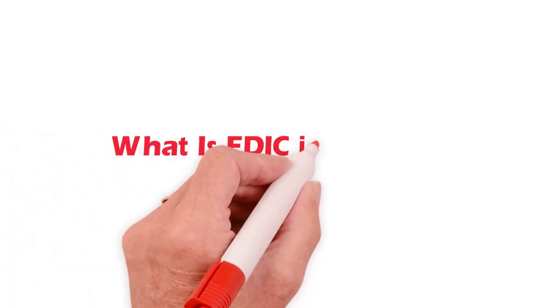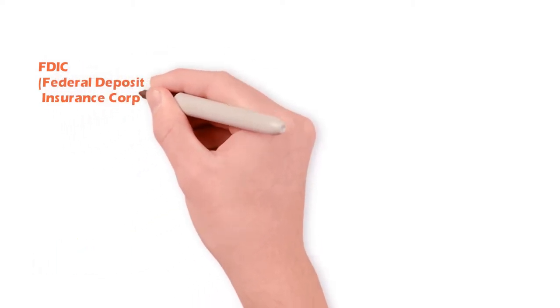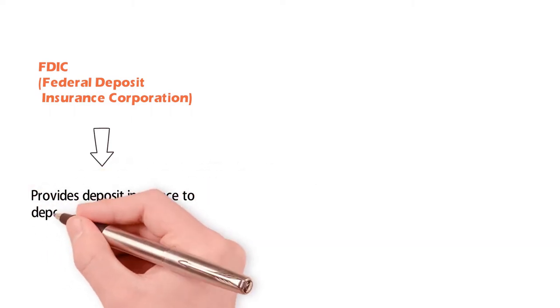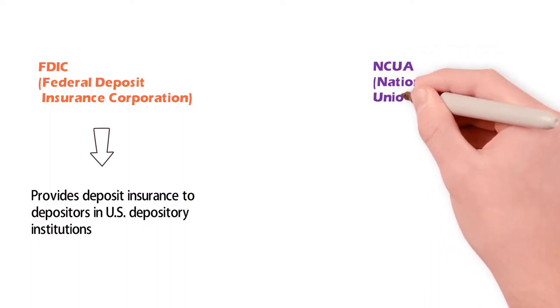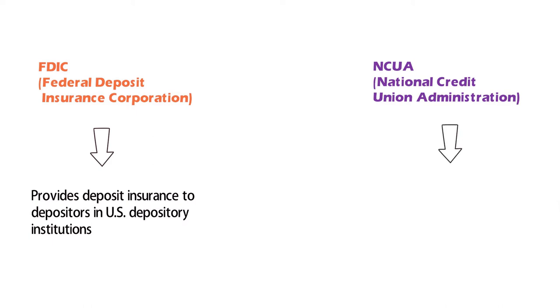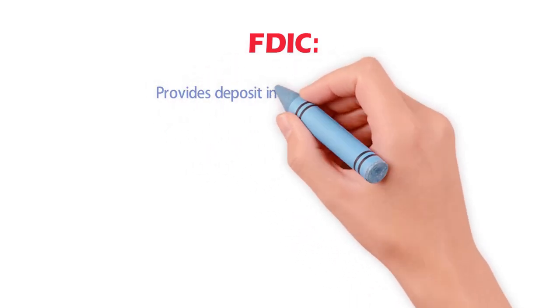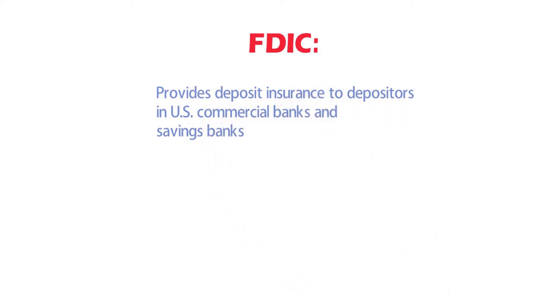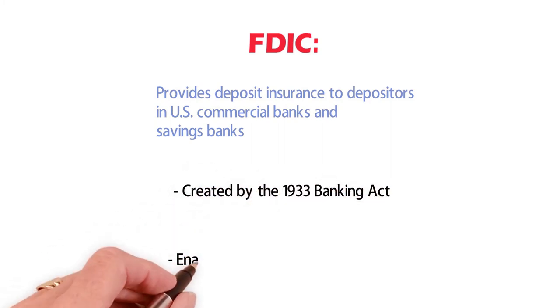What is FDIC insurance? The Federal Deposit Insurance Corporation, or FDIC, is one of two agencies that provide deposit insurance to depositors in US depository institutions. The other is the National Credit Union Administration, or NCUA, which regulates and insures credit unions. The FDIC is a United States government corporation providing deposit insurance to depositors in US commercial banks and savings banks.